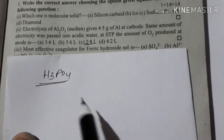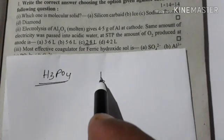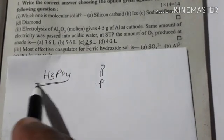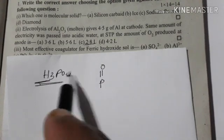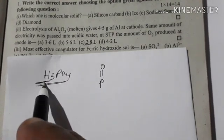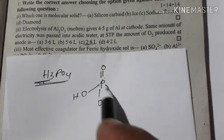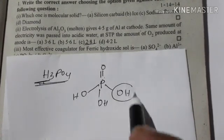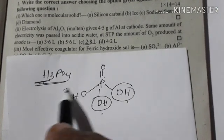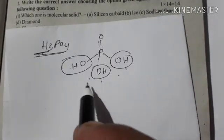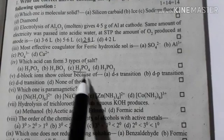H3PO4 has three acidic hydrogens and three oxygen groups, so it can form three types of salts — you can count 1 to 3. The right answer corresponds to the phosphate option.